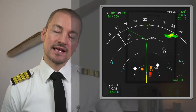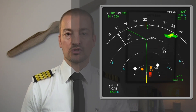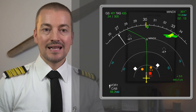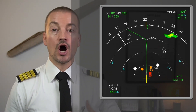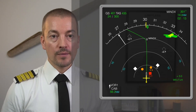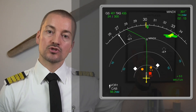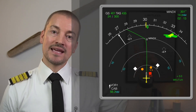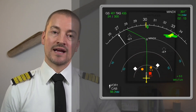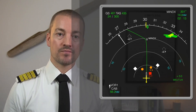On the ND display there are different symbols for traffic. Starting with the "others" category — up to 30 nautical miles away from the aircraft — they are shown as spade symbols that are not filled in.